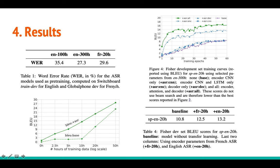Coming to results — the first set shows word error rates for the ASR pre-training models. For English Switchboard, training on 100 hours gives 35.4% WER; training on 300 hours gives 27.3% on the development set. These are higher than state-of-the-art results for Switchboard (around 16%), because the model is stopped at 30 epochs rather than fully trained. For French, they achieve 29.6% WER. These pre-trained models are then used to initialize the translation fine-tuning experiments.